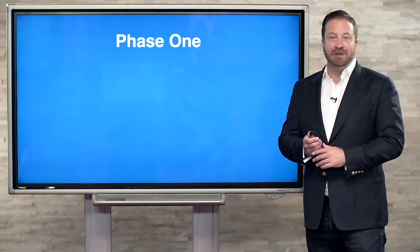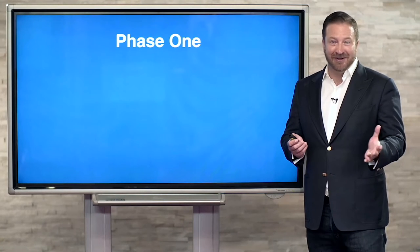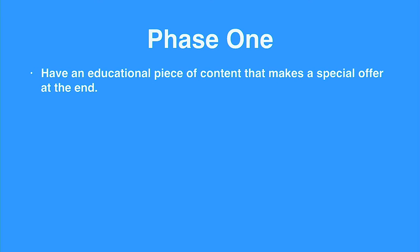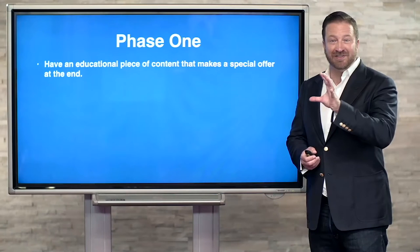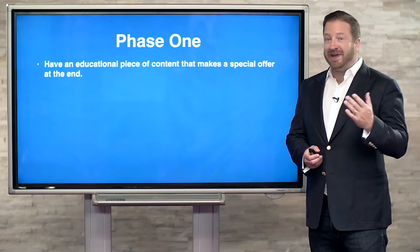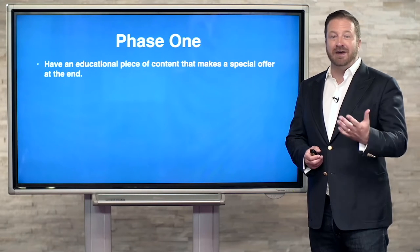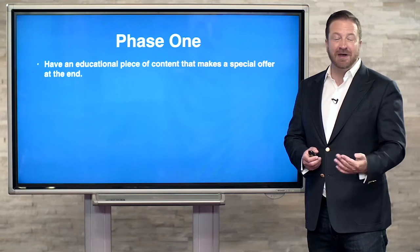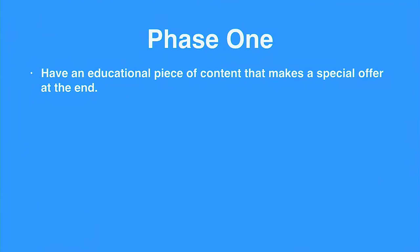First, the big picture: phase one looks like this. You want to start with an educational piece of content that makes a special offer at the end. We can double revenue — potentially even better — just by sending more emails. But we can't just bombard the list with 'buy my stuff' emails. We always want to send a click sequence out to the list and then follow up with everybody who clicks.